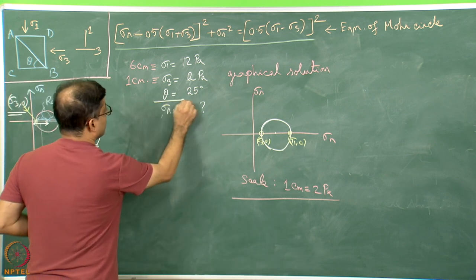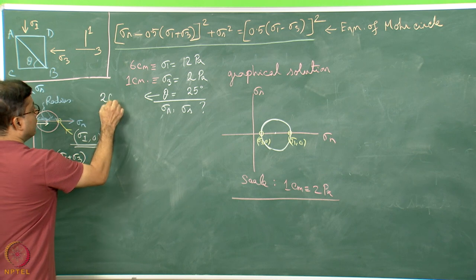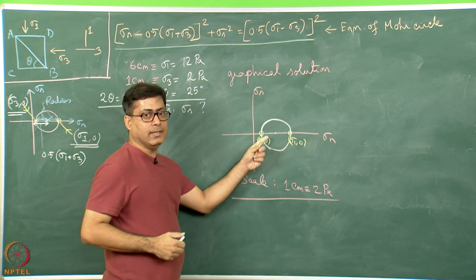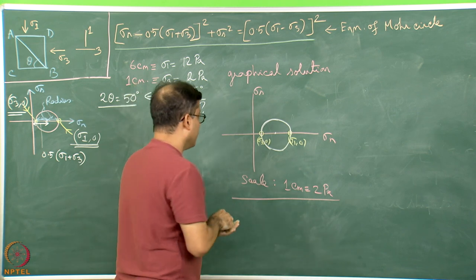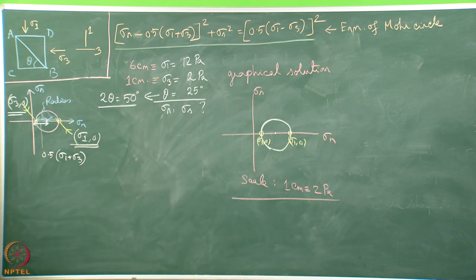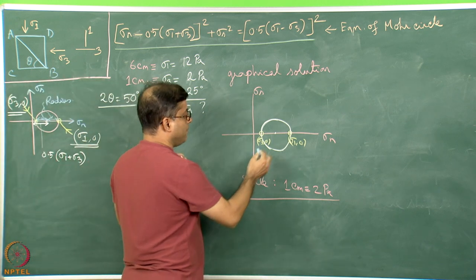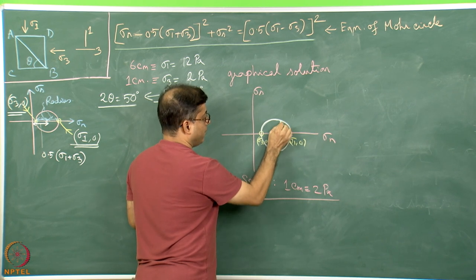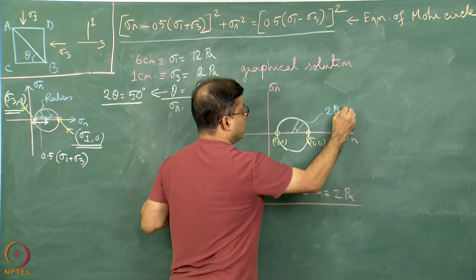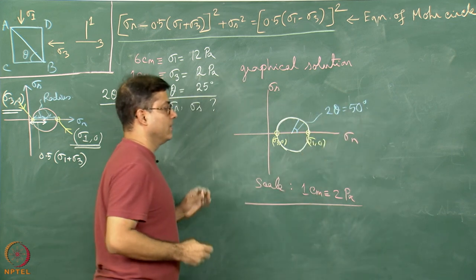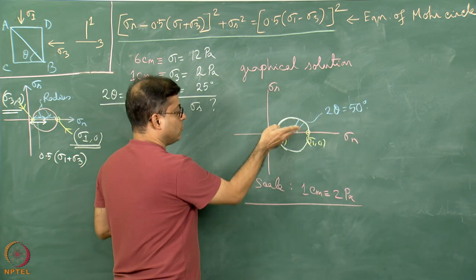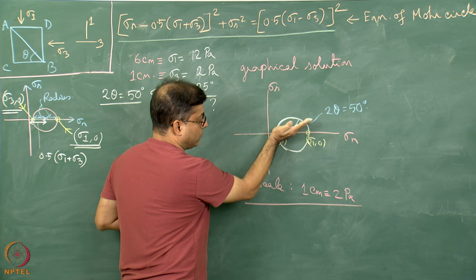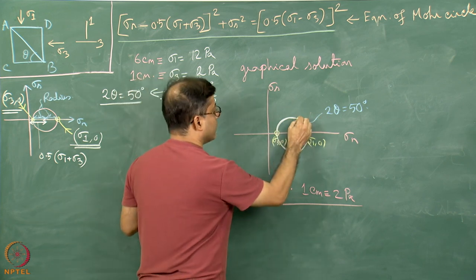Next, theta is 25 degrees, so I calculate 2-theta, which is 50 degrees. I have to draw a 2-theta angle of 50 degrees — not theta, but 2-theta. From the center and from the sigma N line, I draw a 50-degree angle. Moving anti-clockwise by 2-theta from sigma N, that line intersects the Mohr circle at a point with a sigma N value and a sigma S value.